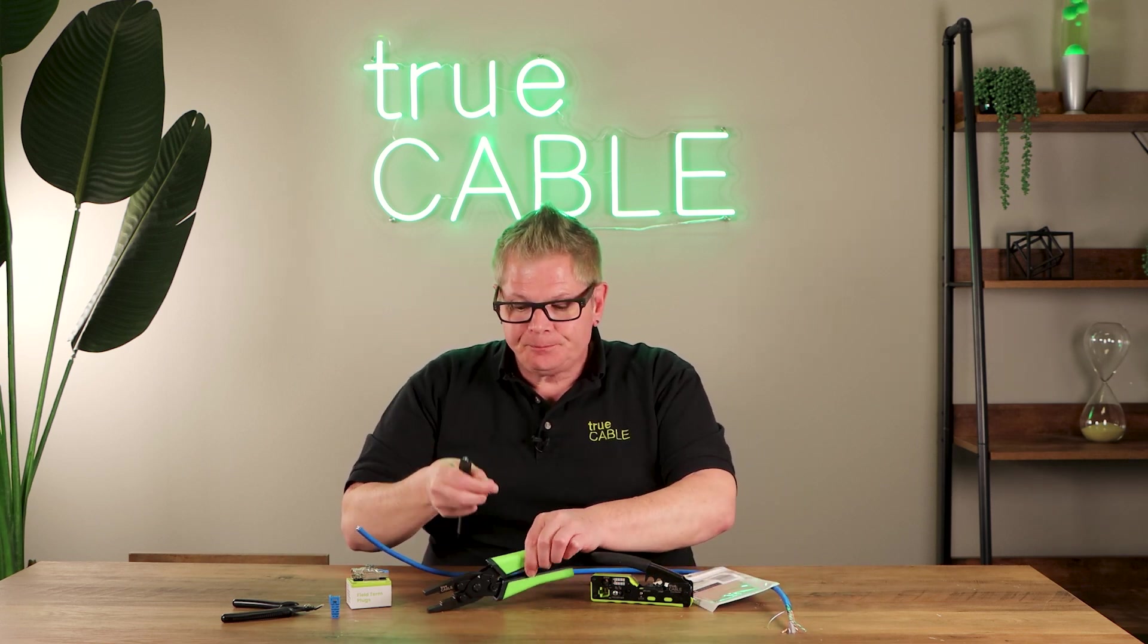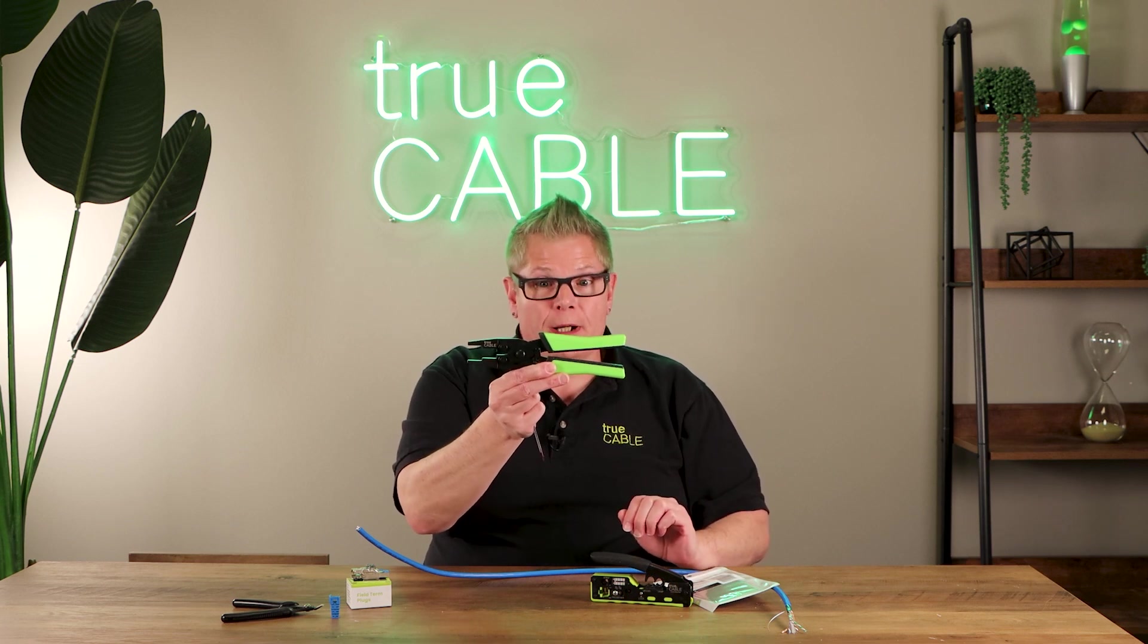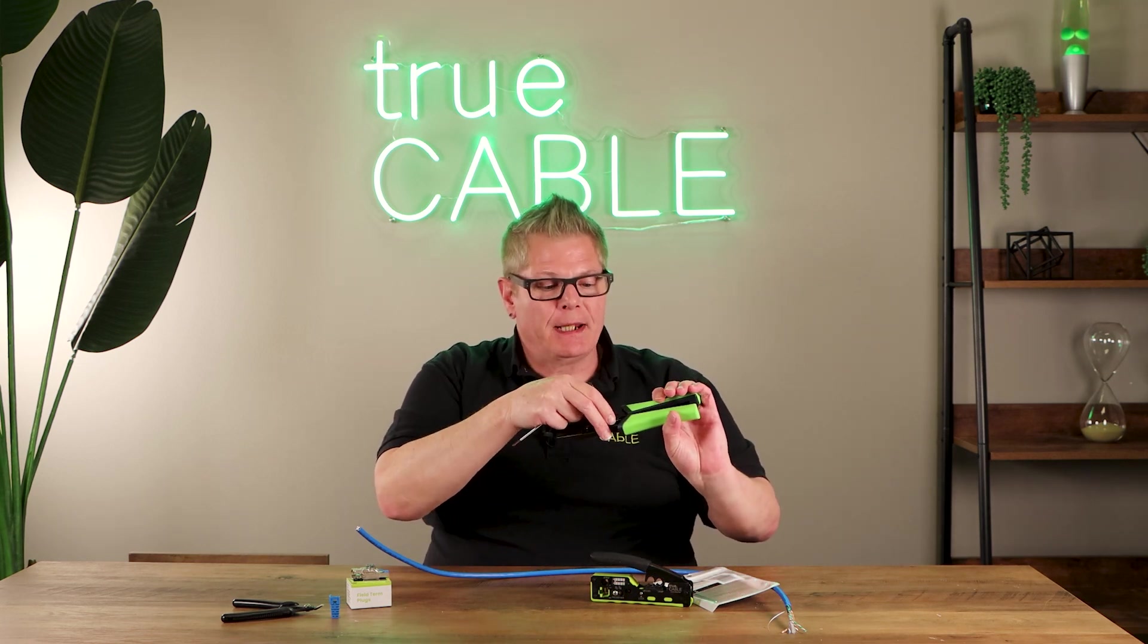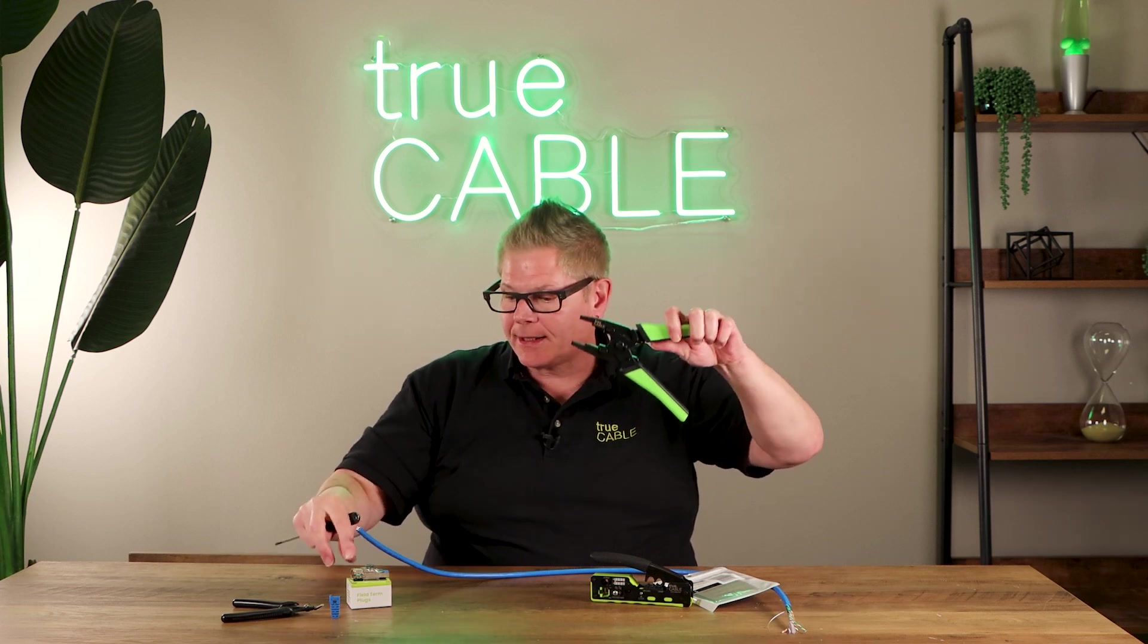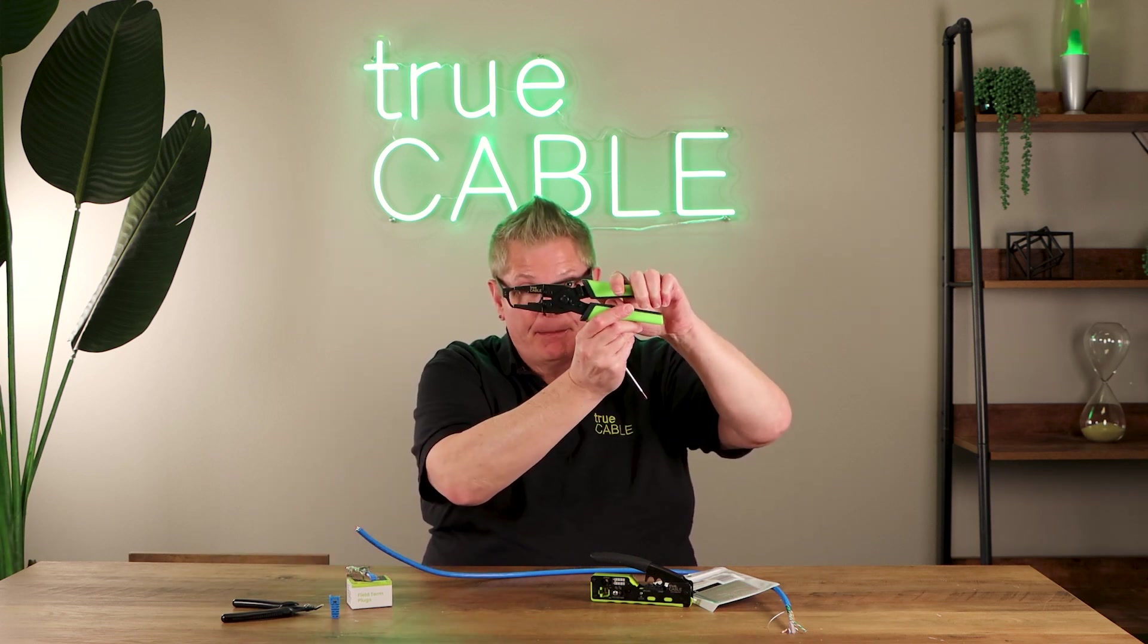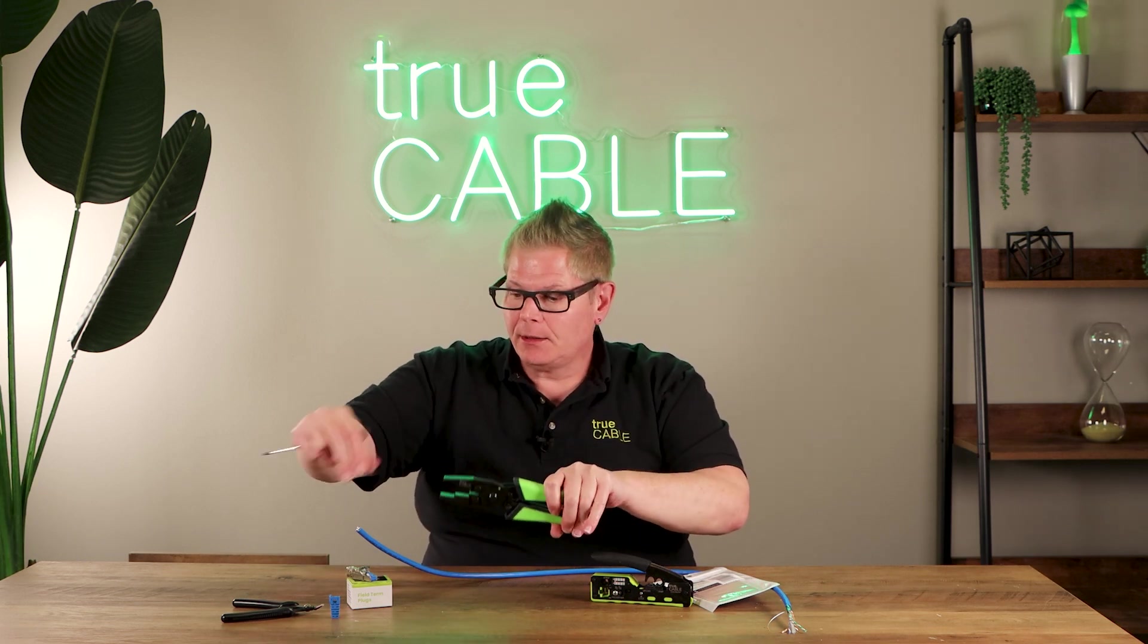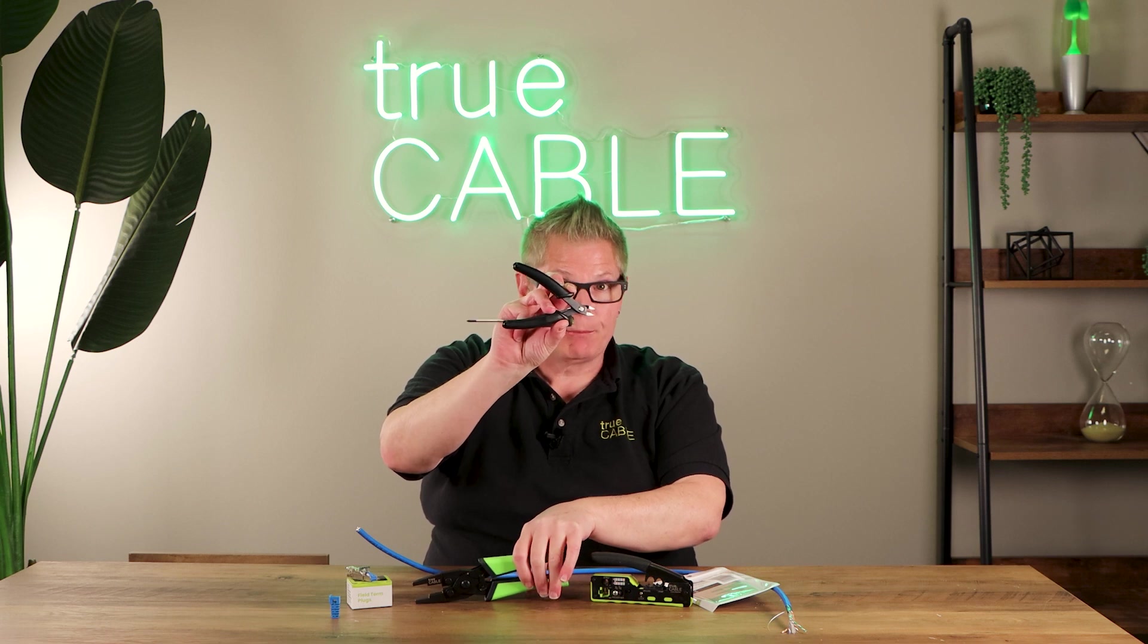You're also going to need our parallel crimping pliers, otherwise known as True Close, and this makes closing the tool-less mechanism on the field termination plug a lot simpler, because they close in a parallel fashion. And of course, you're also going to need flush cutters to prep up your cable.